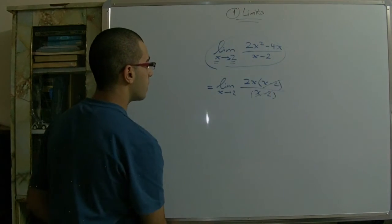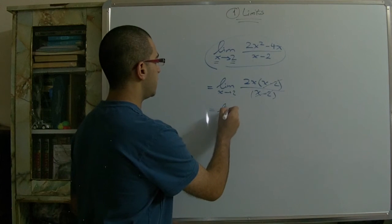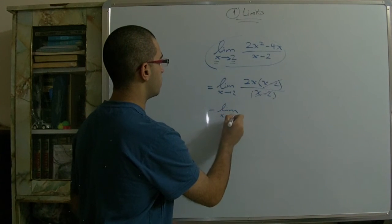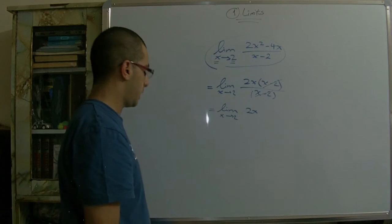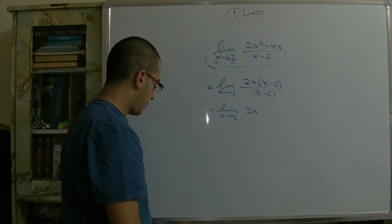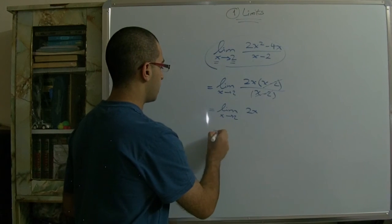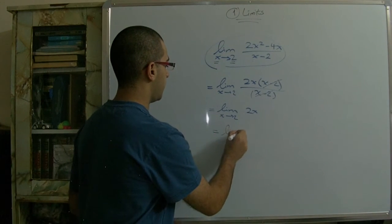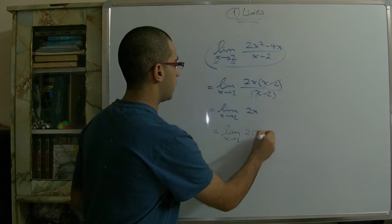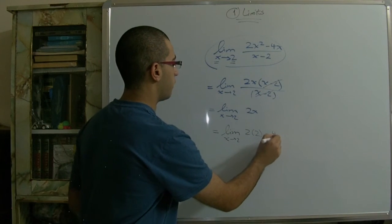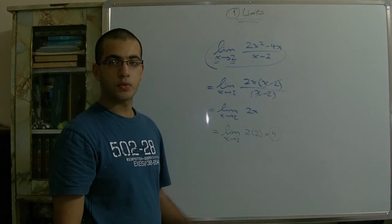So we factorize the numerator: we take 2x outside to get 2x(x minus 2), and the denominator is (x minus 2). The (x minus 2) bracket in the numerator cancels with the (x minus 2) in the denominator, and we get 2x. So lim as x approaches 2 of 2x gives us 2 times 2 equals 4. This result is different from the first undefined one.